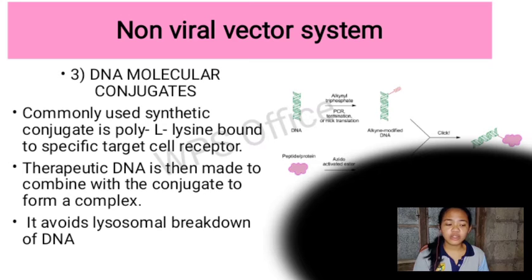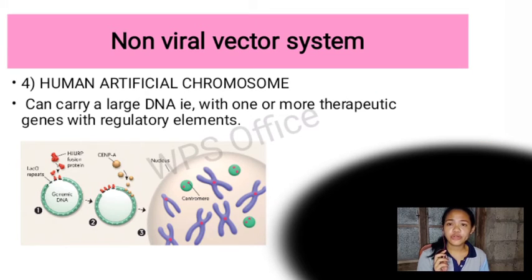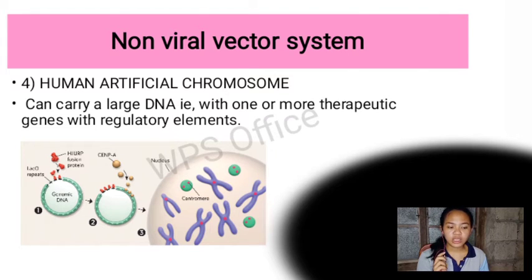The third non-viral vector is DNA molecular conjugates. A commonly used synthetic conjugate is poly-L-lysine, bound to a specific target cellular receptor. Therapeutic DNA is then combined with the conjugate to form a complex, which avoids lysosomal breakdown of DNA. The fourth is human artificial chromosomes, which can carry large DNA, for example with one or more therapeutic genes along with regulatory elements.